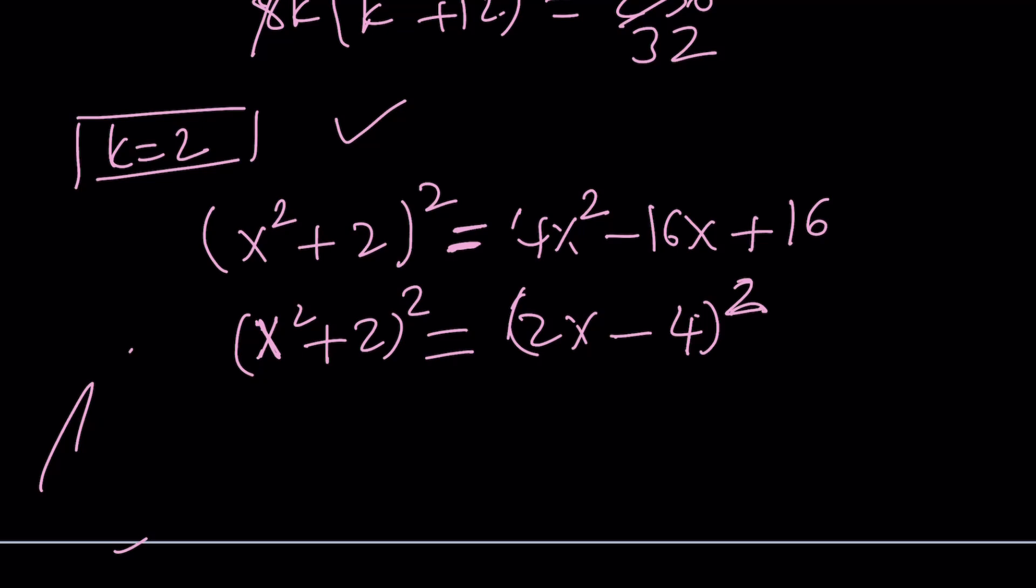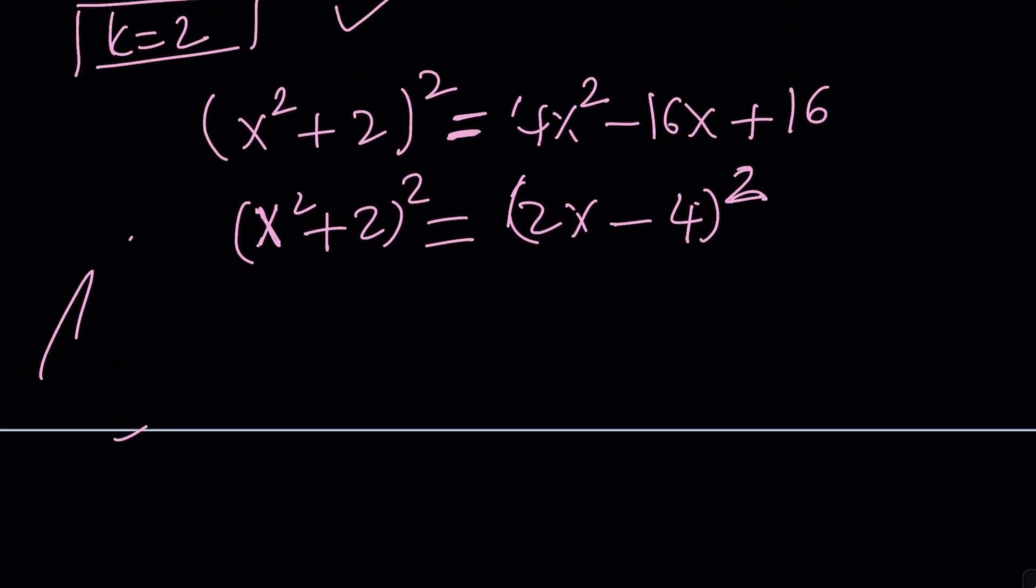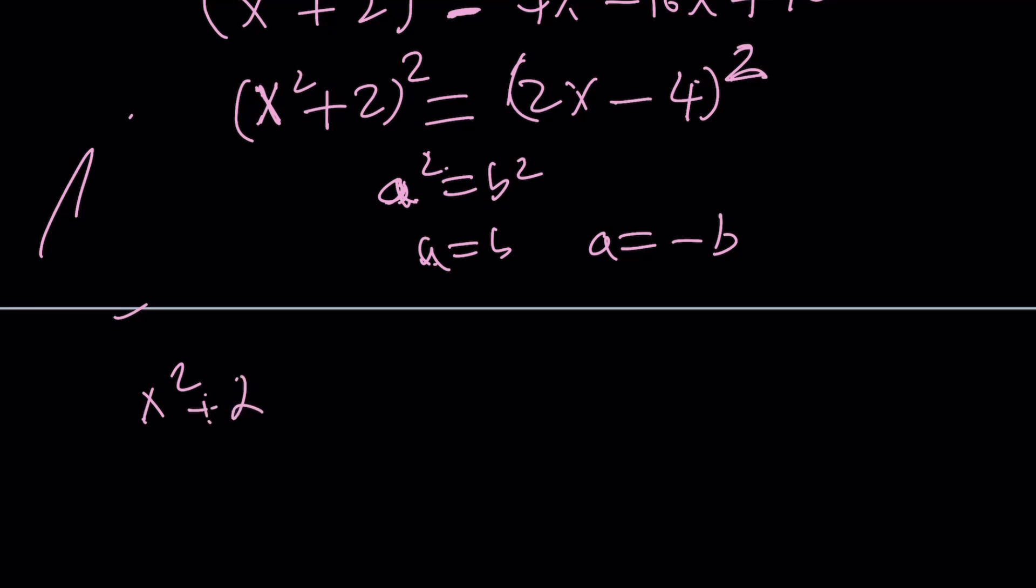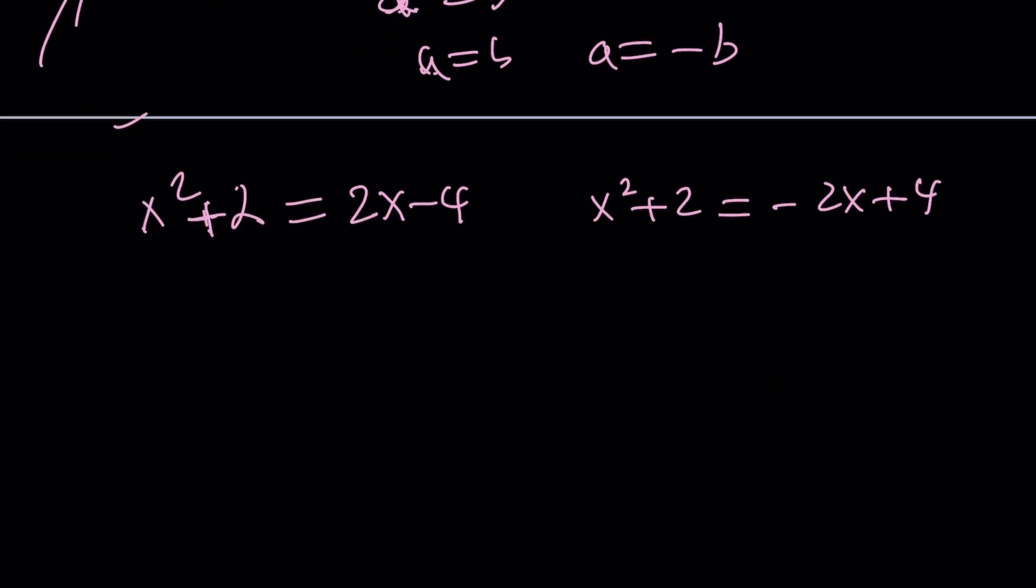So we get that. Now, we have two perfect squares that are equal to each other. You can definitely turn this into a difference of two squares, or you can actually consider the following. If a squared is equal to b squared, then we can safely say that a is equal to b and a is equal to negative b. OK? So, from here we get the two cases. x squared plus 2 is equal to 2x minus 4. And x squared plus 2 is the opposite of 2x minus 4, which is negative 2x plus 4. From here we get two quadratics. x squared minus 2x plus 6 equals 0. And x squared plus 2x minus 2 equals 0.